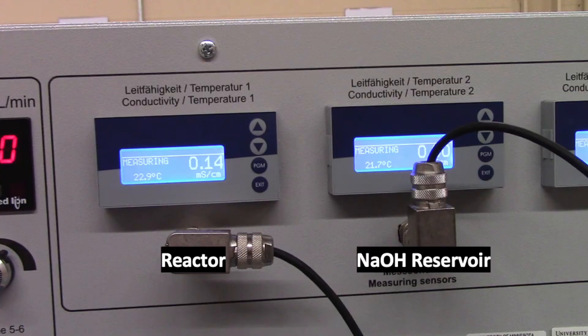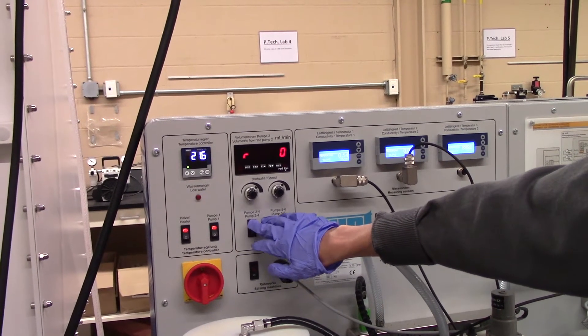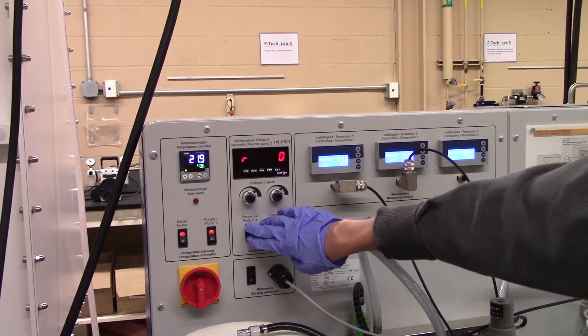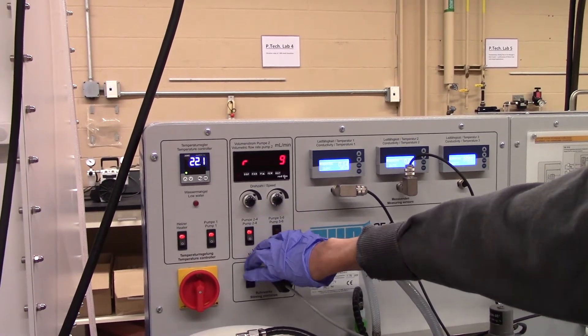Note that conductivity 1 accounts for the reactor, while conductivity 2 is for the sodium hydroxide reservoir. You may then turn on pumps 2 through 4 as well as the product's tank STIR function to start the reaction.